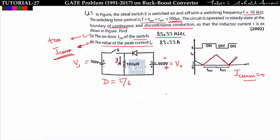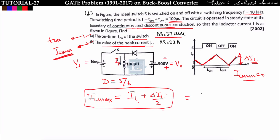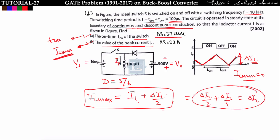For part B, we need to find il_max. From the inductor current waveform at the boundary of continuous and discontinuous conduction, the waveform just touches zero. So il_min = 0 and the peak inductor current equals Δil only. Using il_max = il + Δil/2: since il_min = 0, we get il = Δil/2, so il_max = Δil.